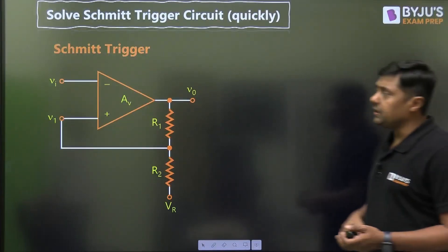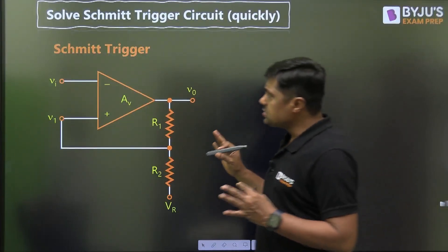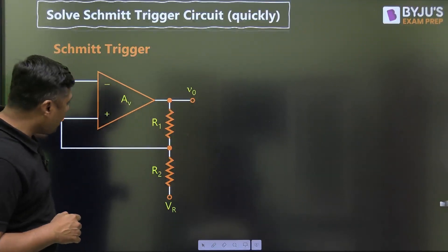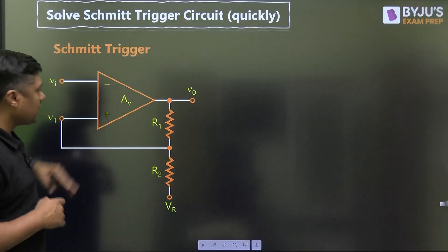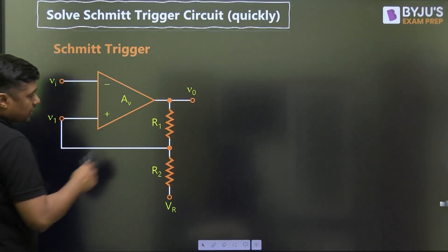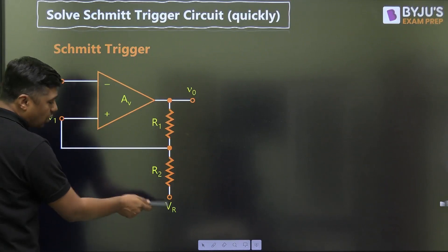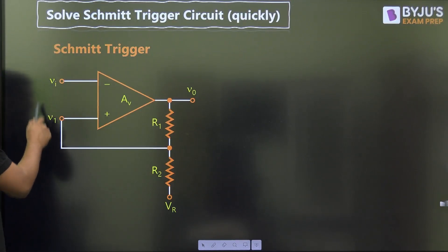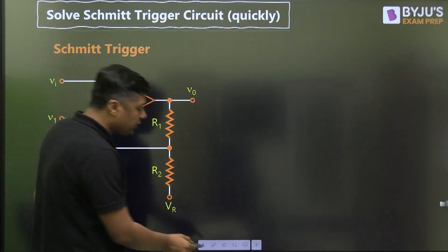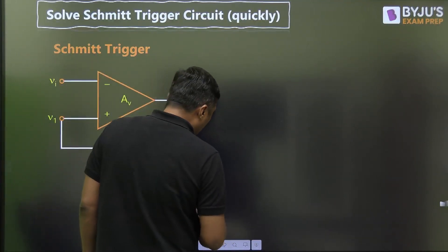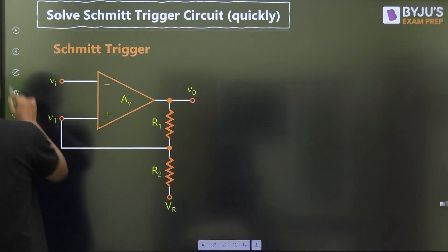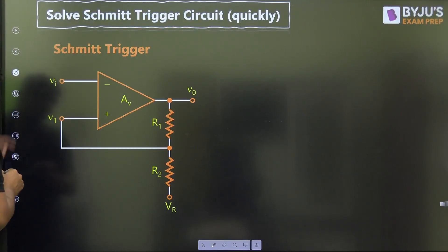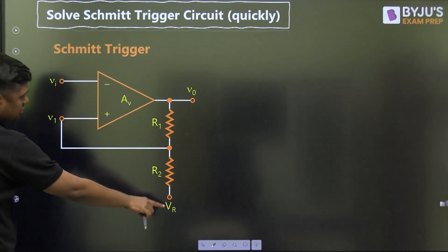This is a symmetry circuit. In this symmetry circuit you can see we are having positive feedback. This is the operational amplifier. Here R1, here R2 — this is called the reference voltage. This is the input; we can connect a sinusoidal input, a triangular input, or any other type of input. Here, this is called reference voltage.